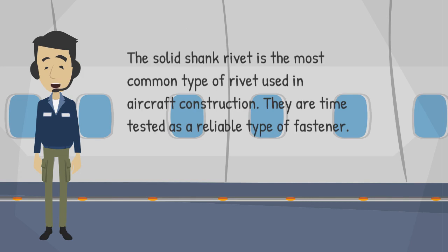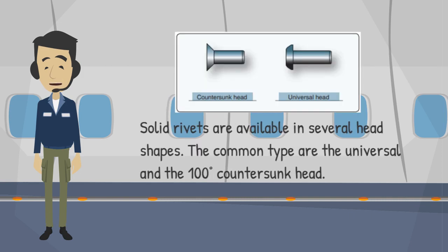The solid shank rivet is the most common type of rivet used in aircraft construction. They are time-tested as a reliable type of fastener. Solid rivets are available in several head shapes; the common types are the universal and the 100-degree countersunk head.